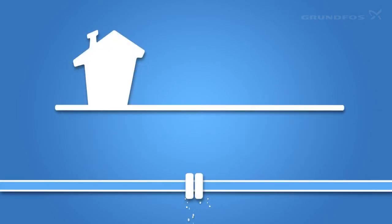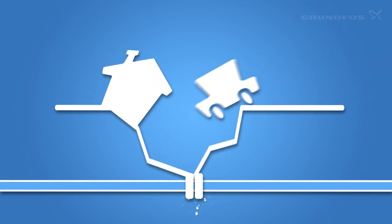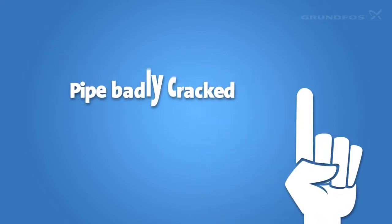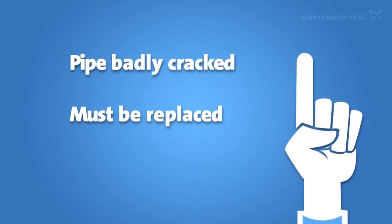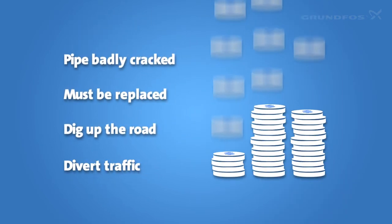That's not all. The water can cause the soil to sink, causing lots of damage to roads and buildings. Also, when a pipe is badly cracked, it must be replaced. You'll need to dig up the road and divert traffic. Yep, that's expensive too.